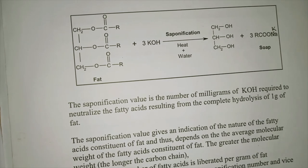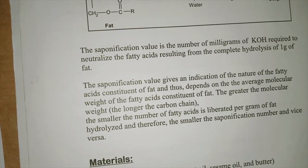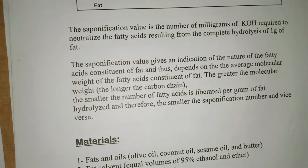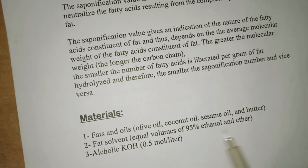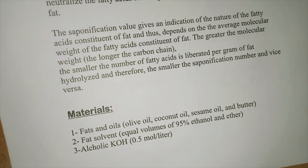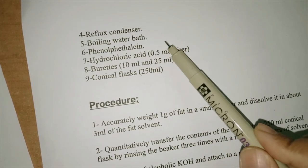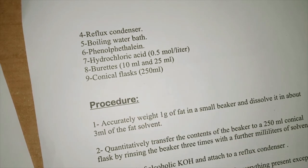This is also done in third semester practicals. Materials required: fat (any type), fat solvent (ethanol and ether), alcoholic KOH (0.5 mol/L), reflux condenser, boiling water bath, phenolphthalein indicator, HCl (0.5 mol/L), burette, and conical flask. Procedure: accurately weigh 1 gram of fat in a small beaker, dissolve it in about 3 mL of fat solvent (ethanol + ether), then quantitatively transfer to a 250 mL conical flask by rinsing three times with further solvent.